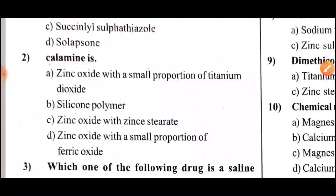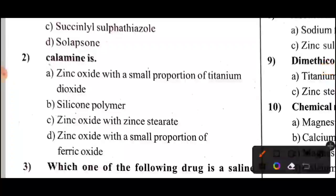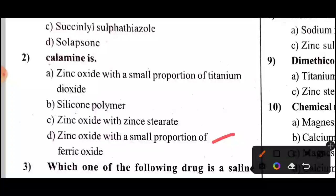Question 2: Calamine is — this is the second topic. Answer: Option D — Zinc Oxide with a small preparation of Ferric Oxide.